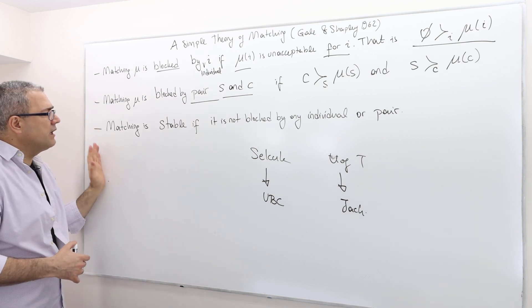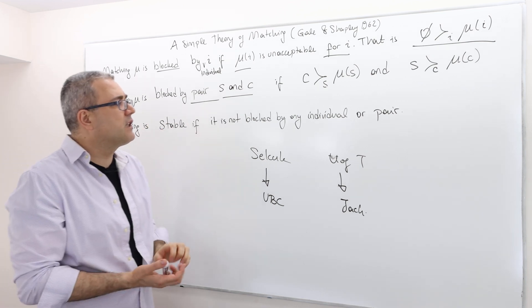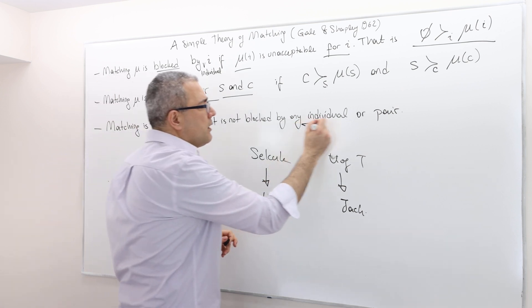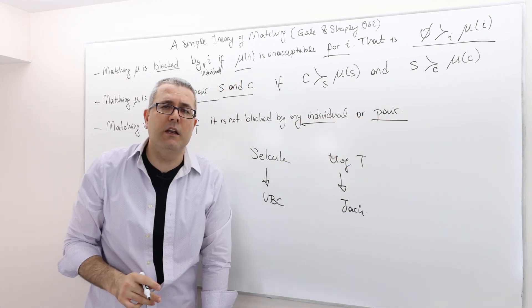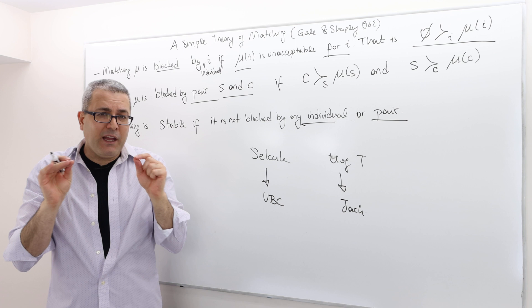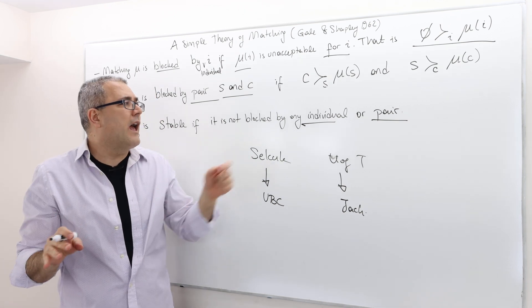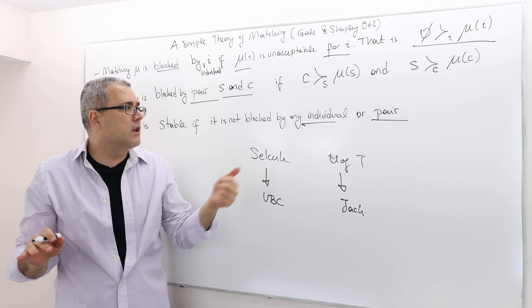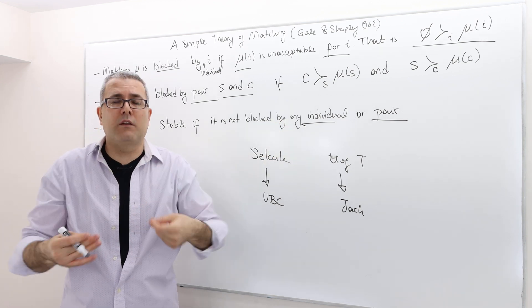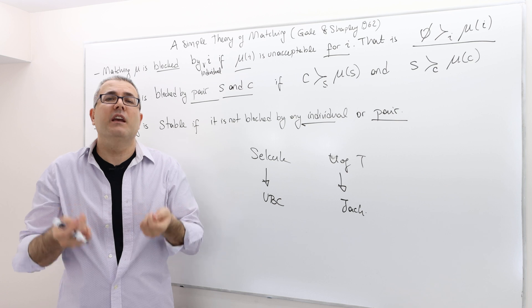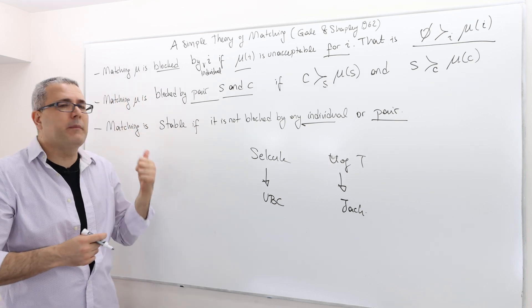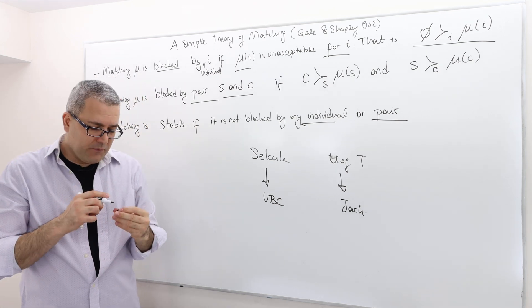Then finally, matching is called stable if it is not blocked by an individual or a pair. So a matching is going to be stable if there is no pair and there is no individual that will block this matching. If this is the case, we call the matching stable.